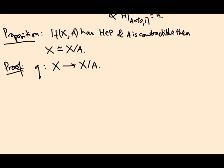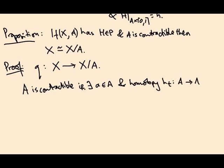I need to find a map going the other way. So to construct that map going the other way, I need to work a bit harder. So I know that A is contractible, i.e. there exists some point little a in A, and a homotopy which I'm going to write as h_t going from A to A, with h_0 being the identity on A, and h_1 being the constant map that sends everything to this single point little a.